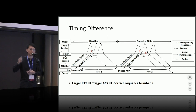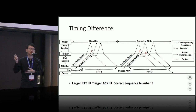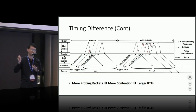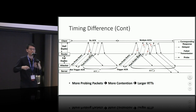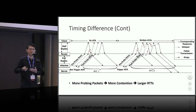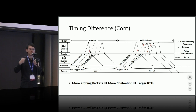The timing difference from this additional response might seem too small to be measurable. But we can amplify the signal: the attacker can send multiple probing spoofed packets to the client, causing more contention and delaying the probe query further. The more probing packets we send, the more contention we experience and the larger the observable round-trip time difference. This is a simplified illustration — reality is more complex — but it gives a concrete example of the timing difference.